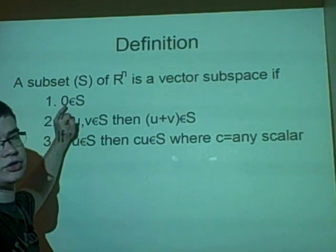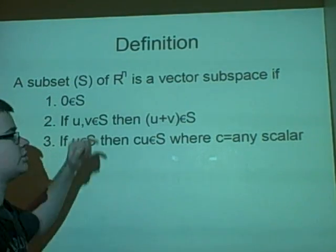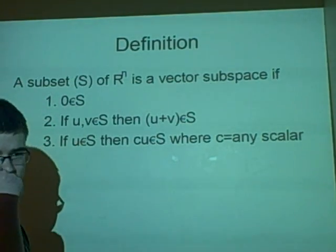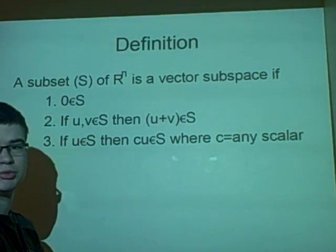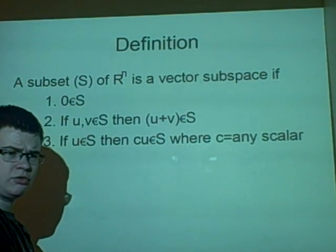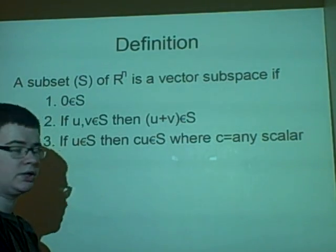So, our first one is that the zero vector is an element of S. So, if you have a vector with a, sorry, not a vector, a matrix, the zero matrix is an element of S. So, if you have a matrix full of zeros, then it should be in S.